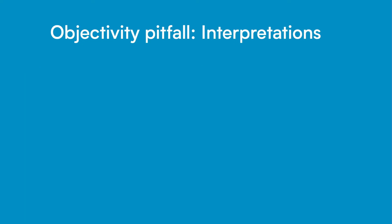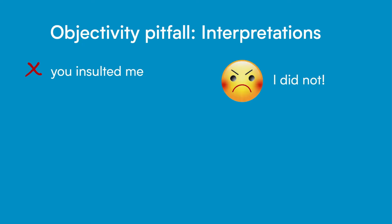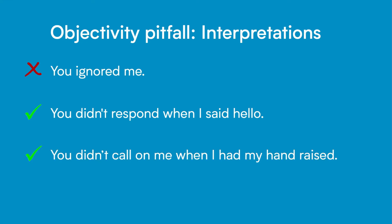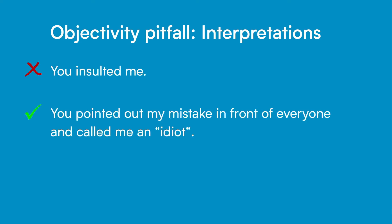The third objectivity pitfall is to make interpretations of what others did. Interpreting the psychological meaning behind their actions can sound accusatory and trigger a defensive response. For example, if you say 'you insulted me,' someone could start disagreeing with whether they did or didn't insult you. Or if you said 'you ignored me,' they could say they weren't ignoring you — the meeting just ran out of time. Instead of saying 'you ignored me,' you can say 'you didn't respond when I said hello,' or 'you didn't call on me when I had my hand raised.' Instead of saying 'you insulted me,' you could say 'you pointed out my mistake in front of everyone' or 'you called me an idiot.' Remember, direct quotes are okay.